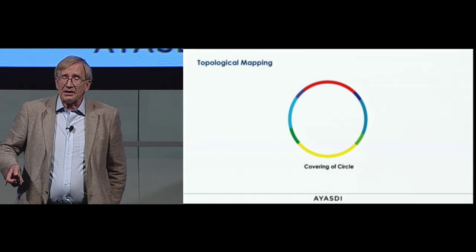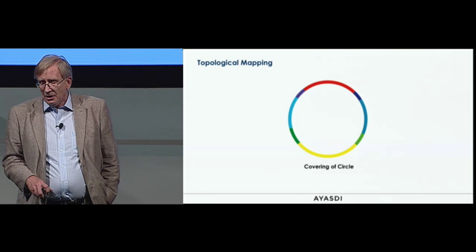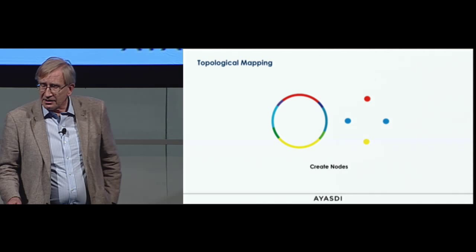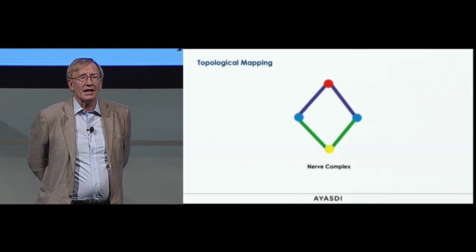Here's how we do this for geometric objects: take a simple mapping algorithm for point clouds. We have a covering of a circle by three sets — red, blue, and yellow — that overlap. For each connected piece of each subset we create a node — four nodes total: red, two blue, and yellow. If any two of those connected components overlap, we connect them with edges. And we've created the circle back again in the form of a so-called nerve complex.